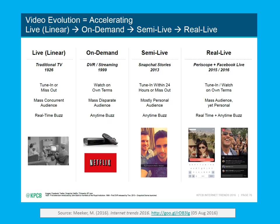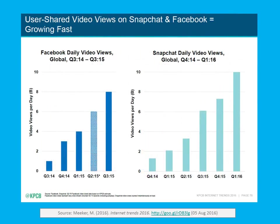Here's an interesting overview from Mary Meeker's 2016 Internet Trends presentation of the way in which video has changed in nature over time. Feel free to pause this video and have a closer look at her chart. It's also worth remembering that a great deal of video sharing nowadays is taking place through social media platforms like Facebook and Snapchat, rather than traditional platforms like YouTube and Vimeo.